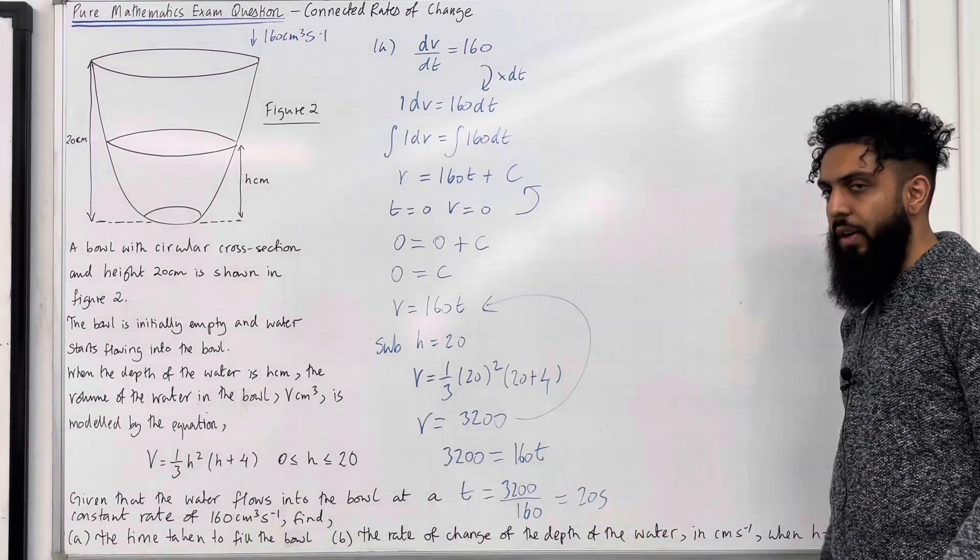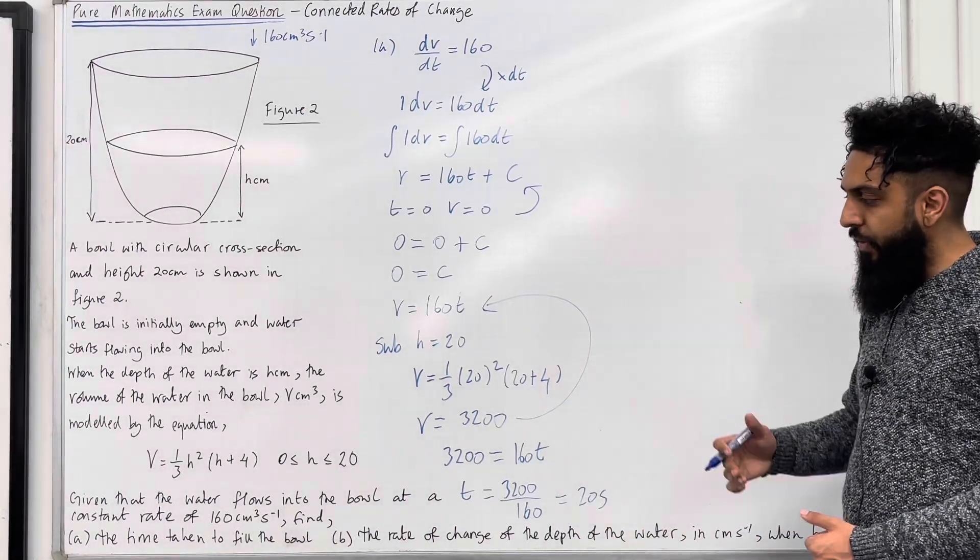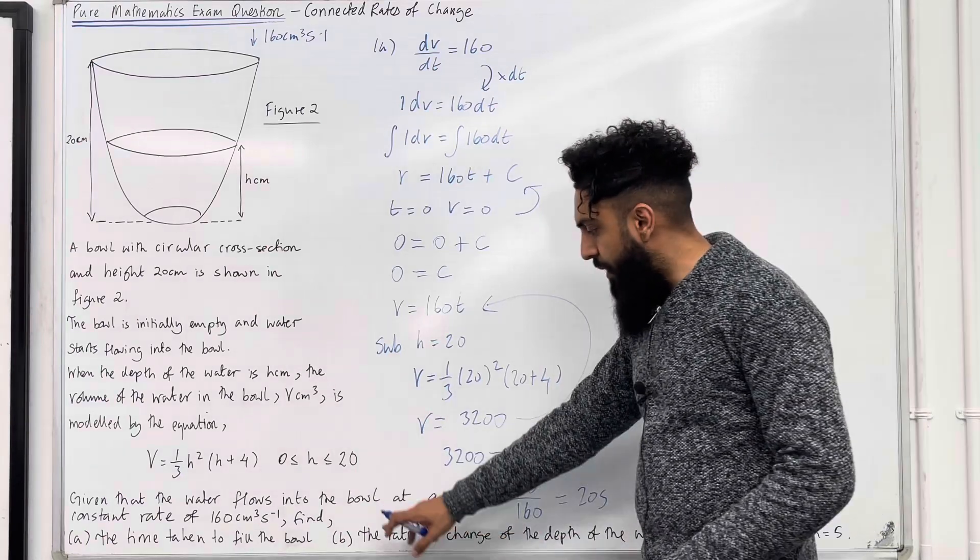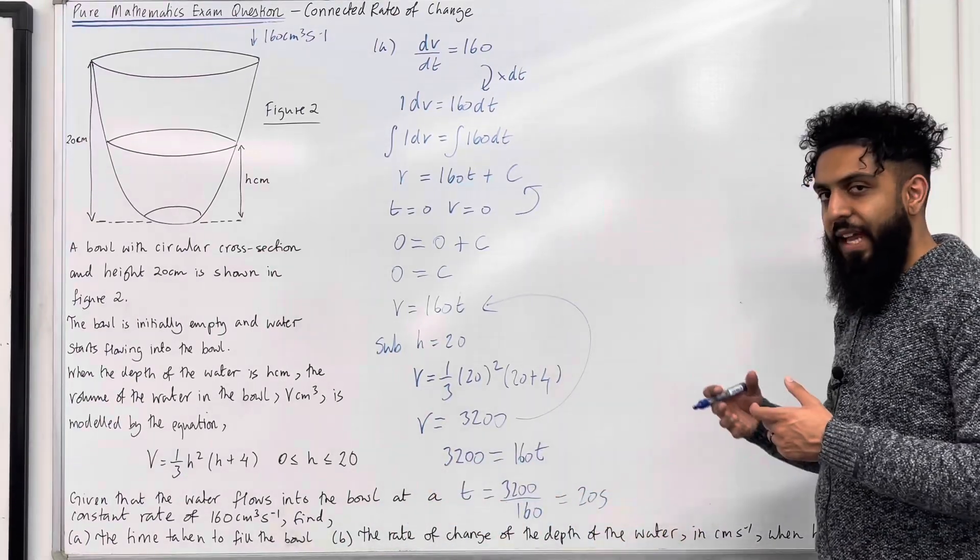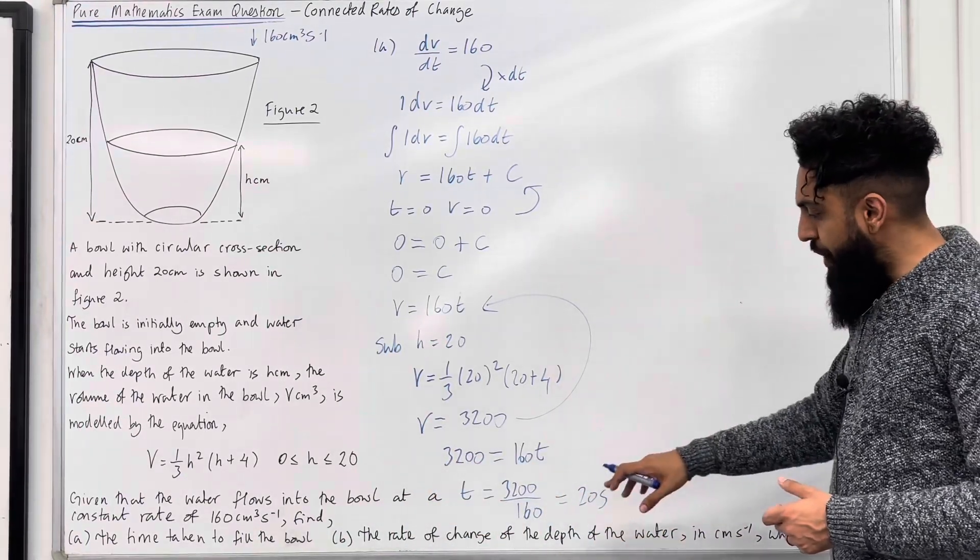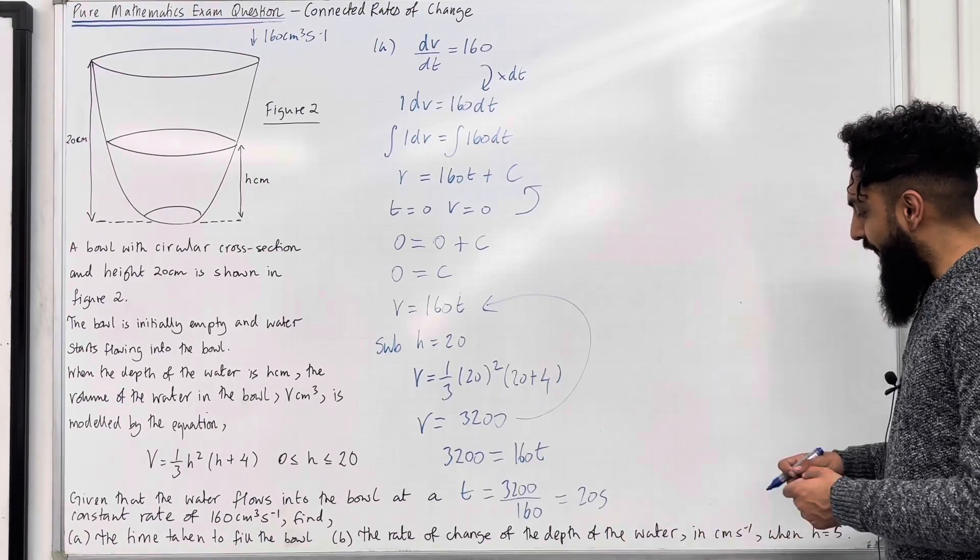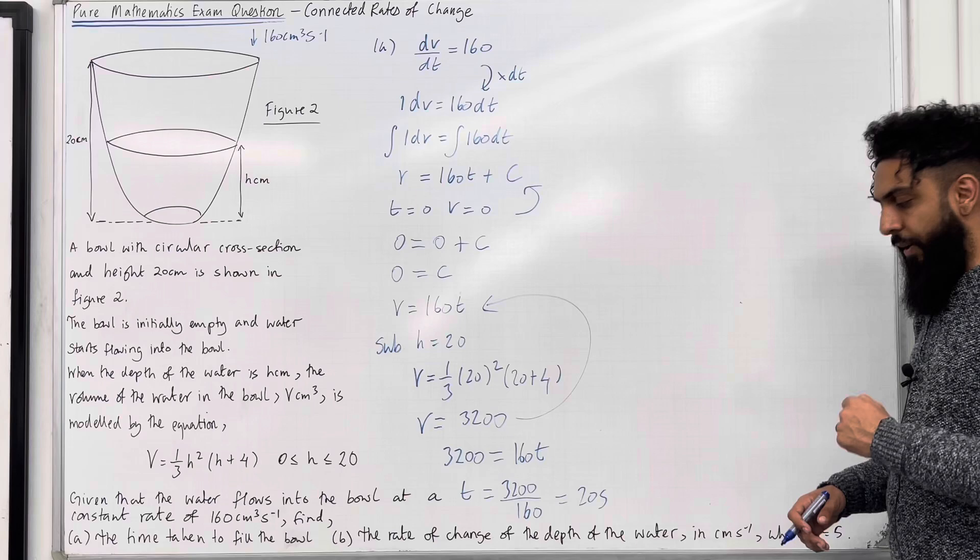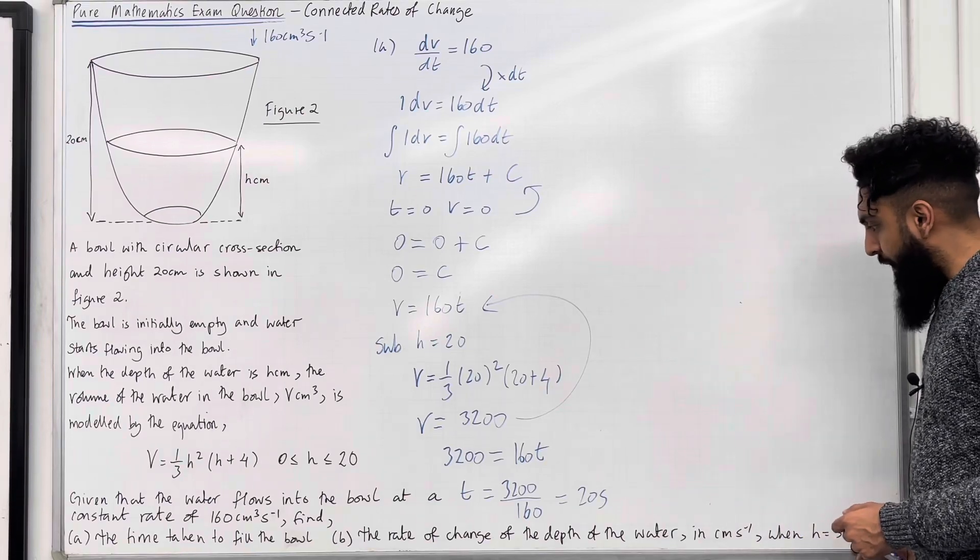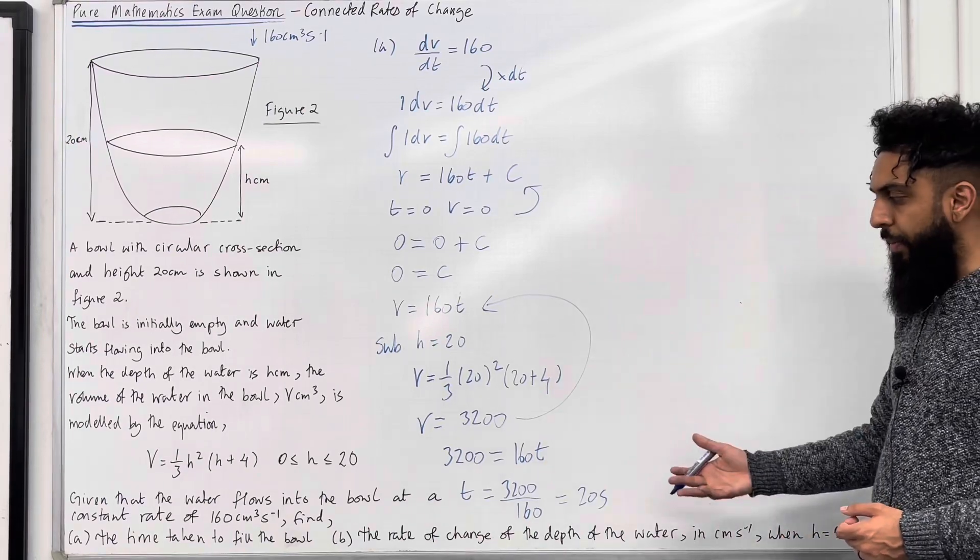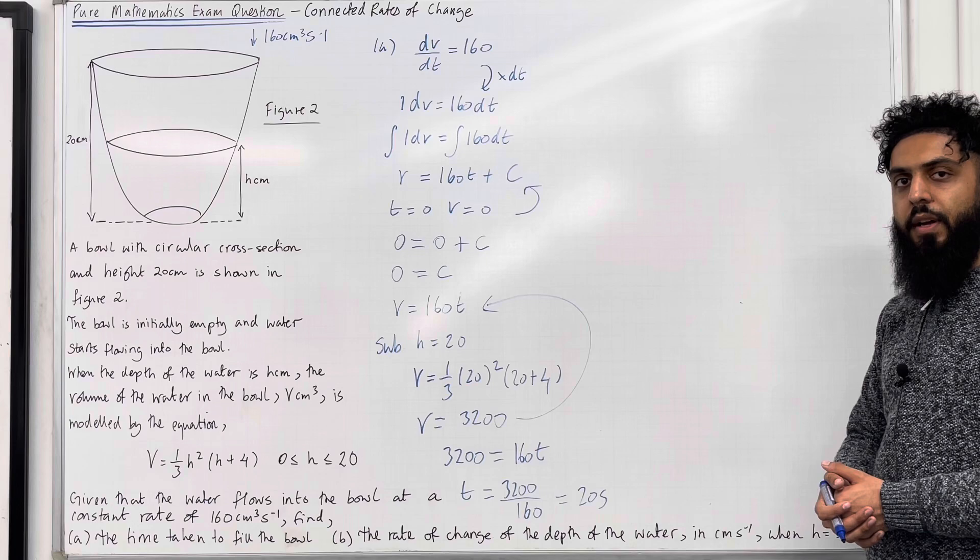And that there, ladies and gents, is the answer to part A. Let's move on to part B. The word rate indicates a differential of change of the depth of the water in centimeter per second. So, centimeter per second indicates depth h over time t when h is equal 5. Please pause the video, have a go at part B. Once you've got your complete solution, then play the video.